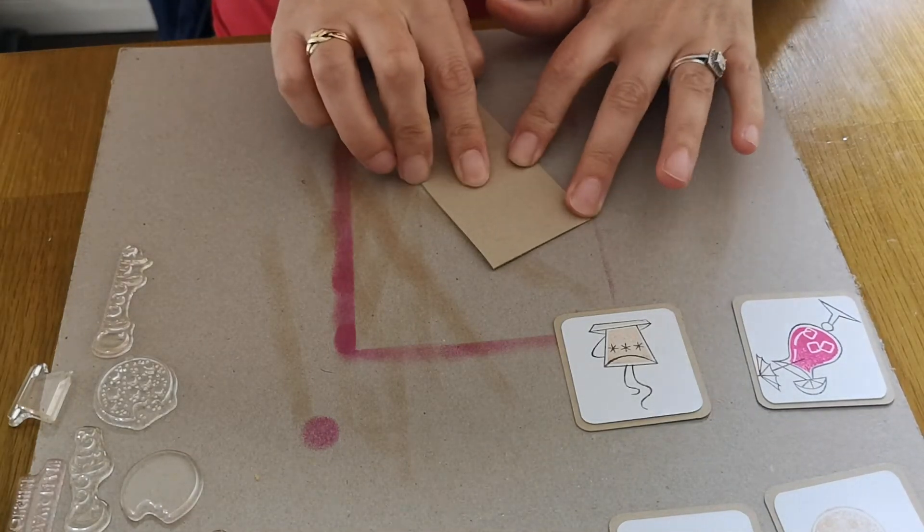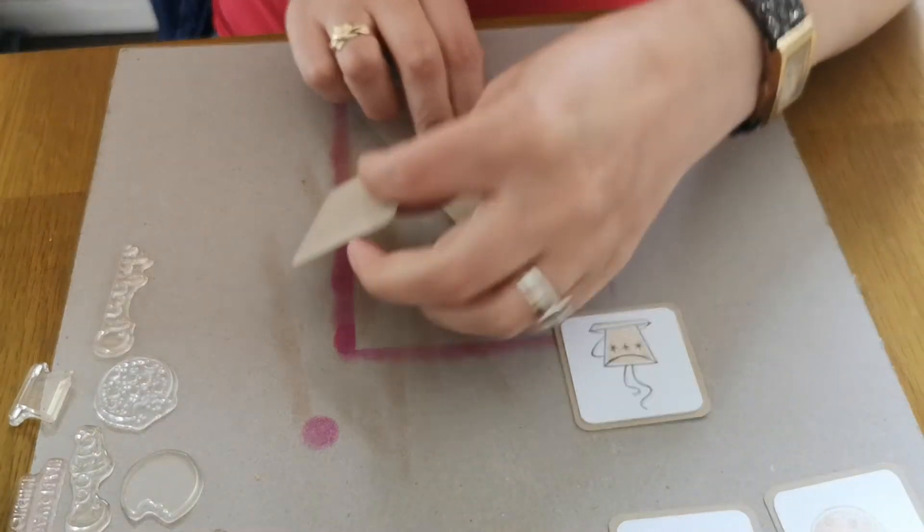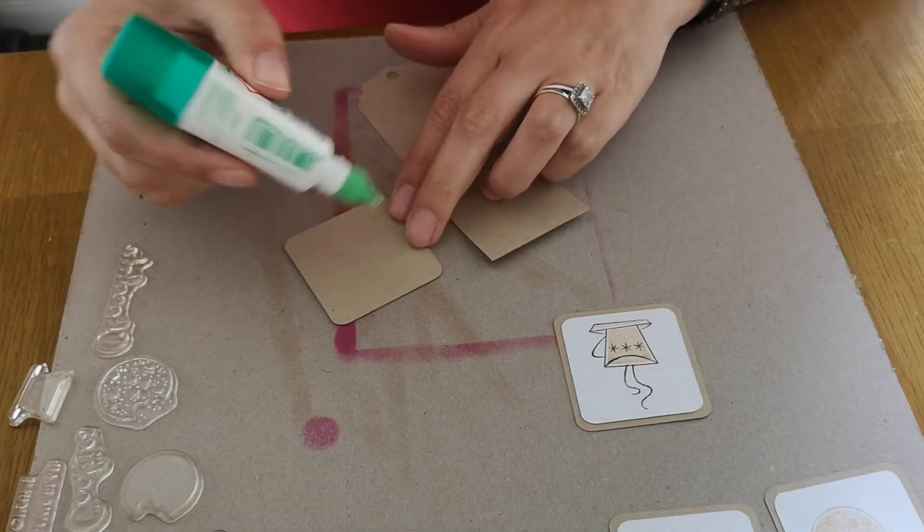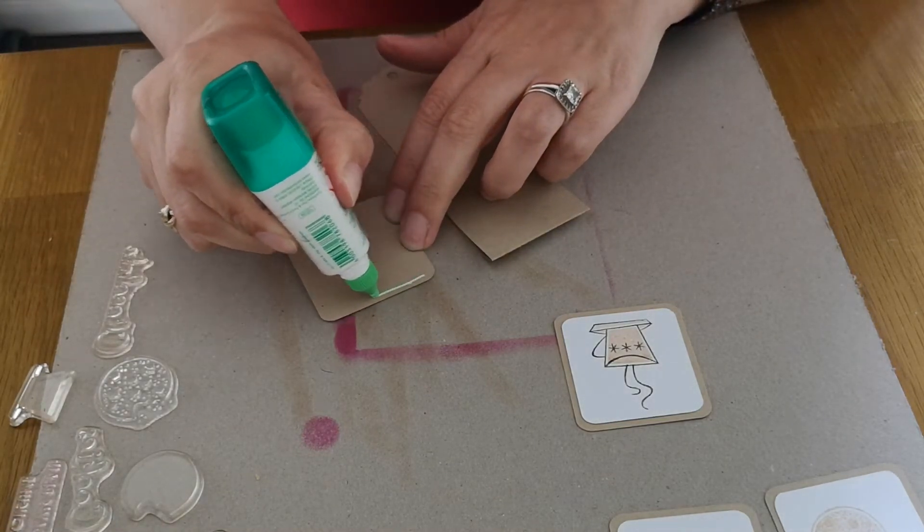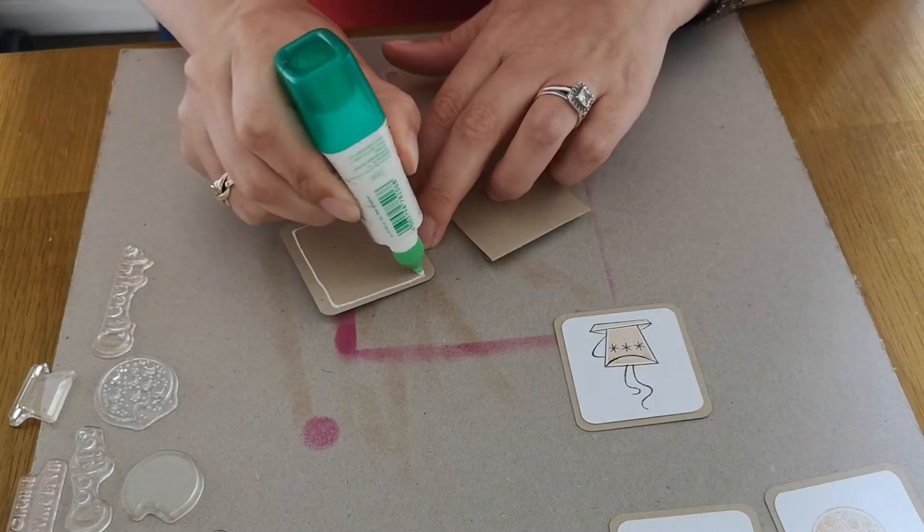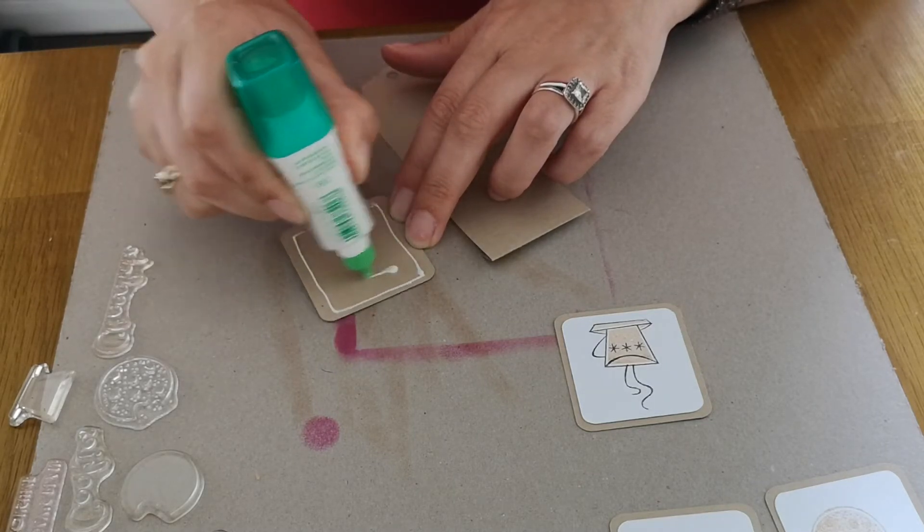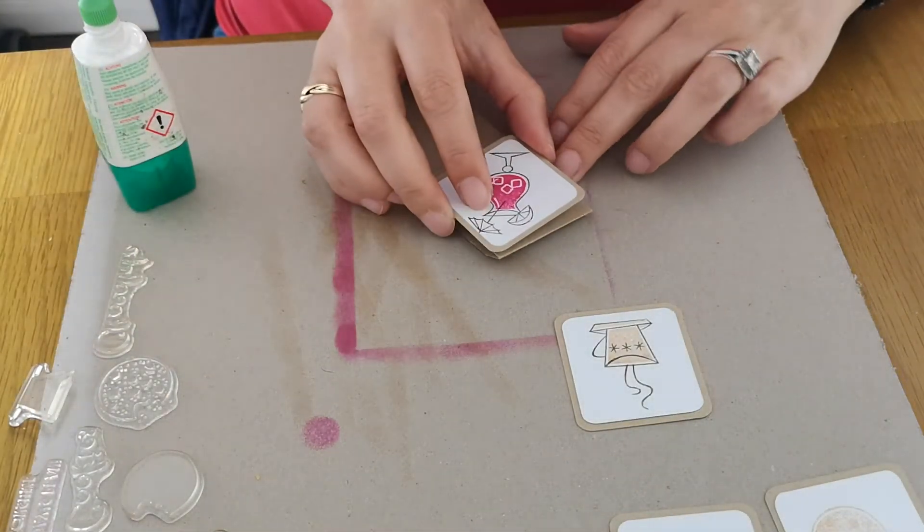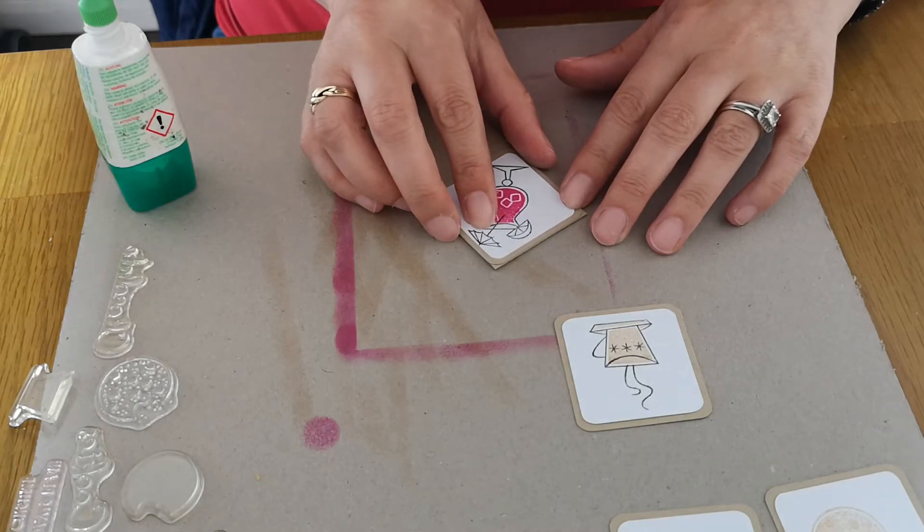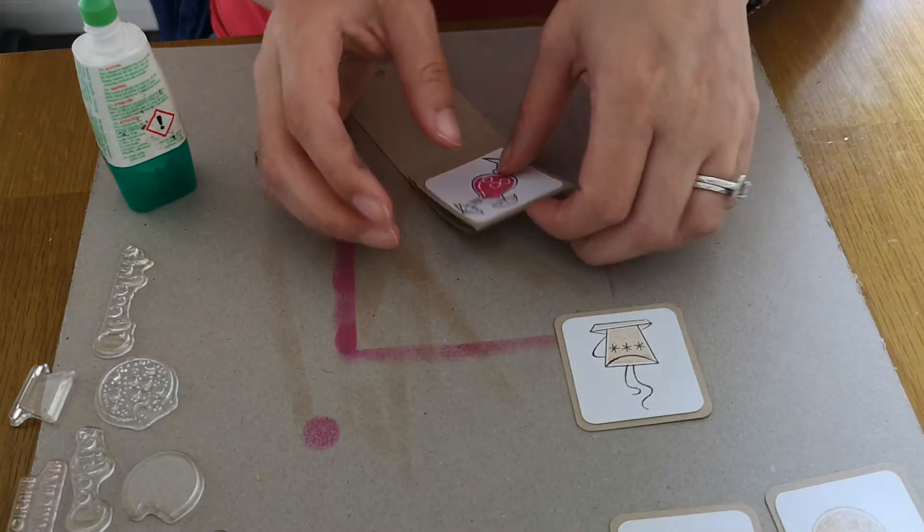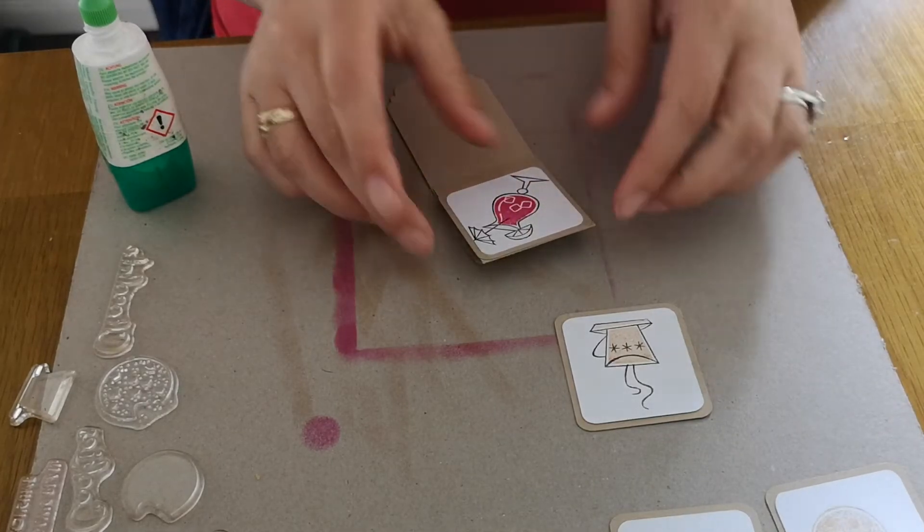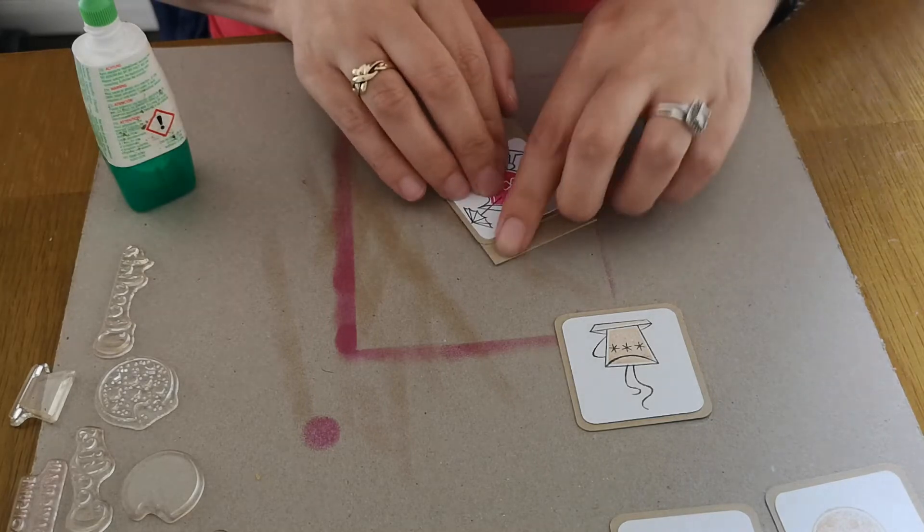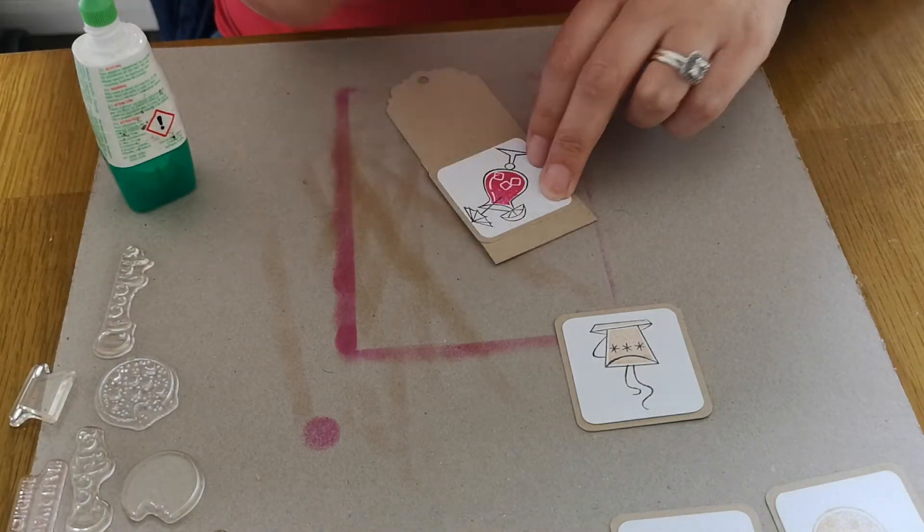This is what we're going to do. This is the first fold and you're going to glue this piece, all of it down onto this, so each part will be completely stuck down. Then you'll press. Now this piece, you're only going to put glue at the top.